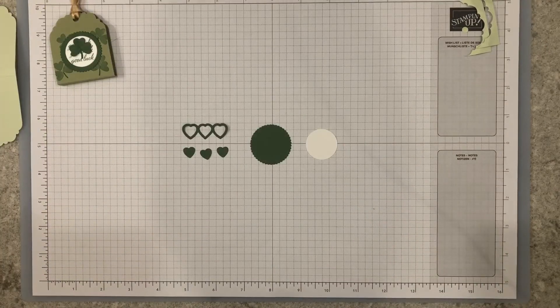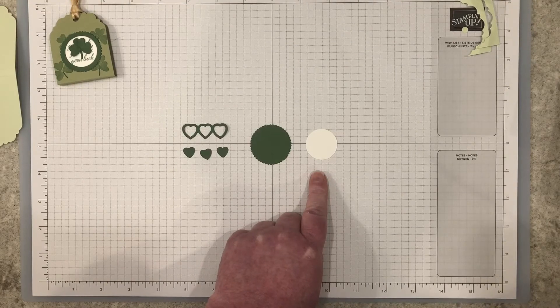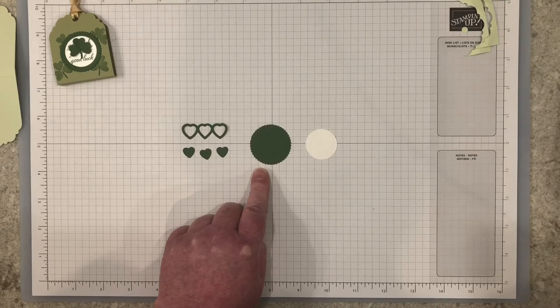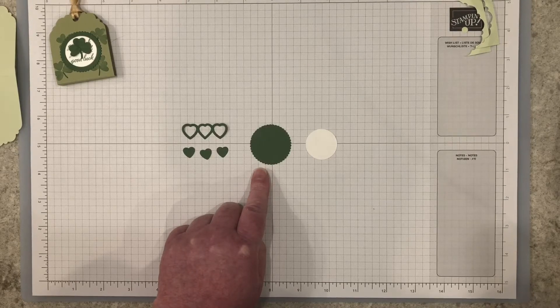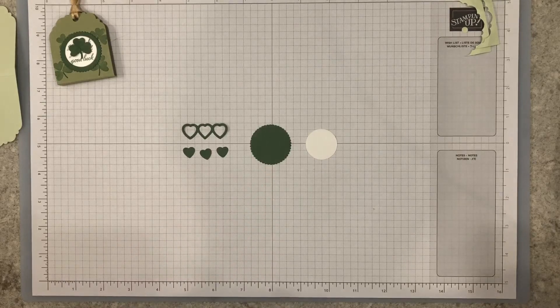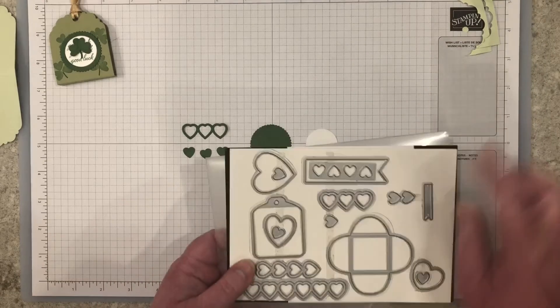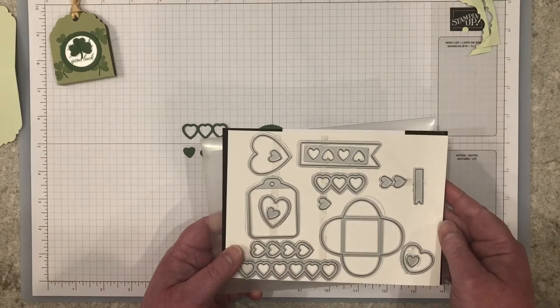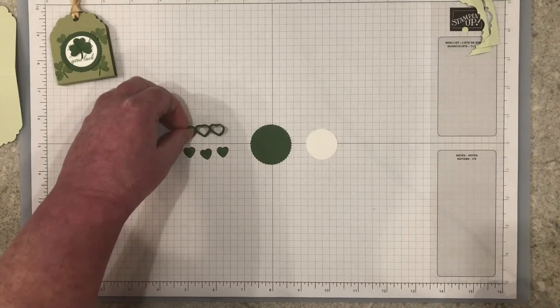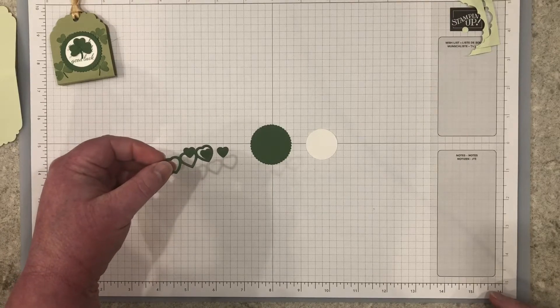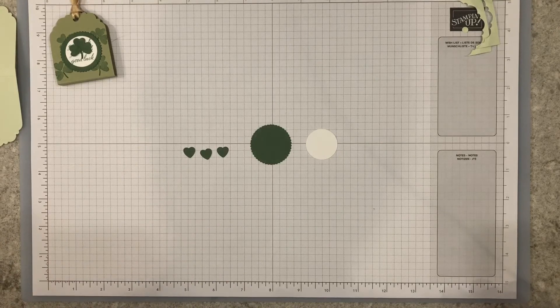For the front embellishment, you're going to die cut the smallest layering circles die and the one and a half inch scallop circle die. I'm using basic white cardstock and garden green cardstock. Then you'll cut the three hearts joined together from the sweetheart dies also in garden green cardstock. You can save this green heart outline for another project if you like. Today we'll only be using the three hearts in the center.